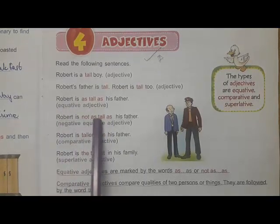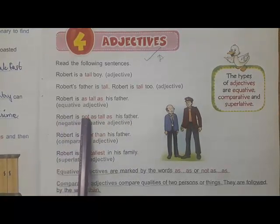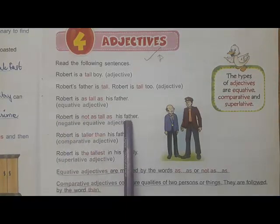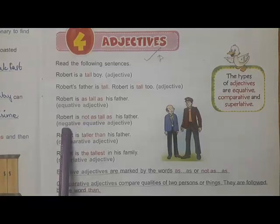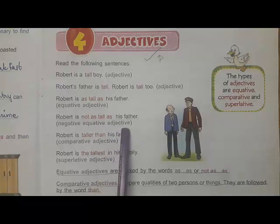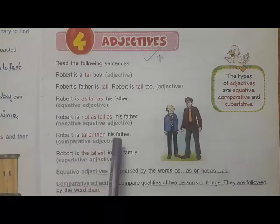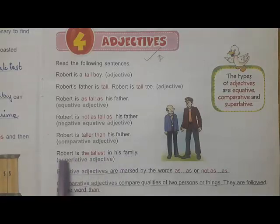Next example: 'Robert is not as tall as his father.' Here we are equating the boy with his father but we are inserting 'not' in the beginning, so this kind of equative adjective is called a negative equative adjective. 'Robert is taller than his father' — here we are comparing Robert with his father, and this kind of comparison is called a comparative adjective. 'Robert is the tallest in the family' — this is a superlative adjective.